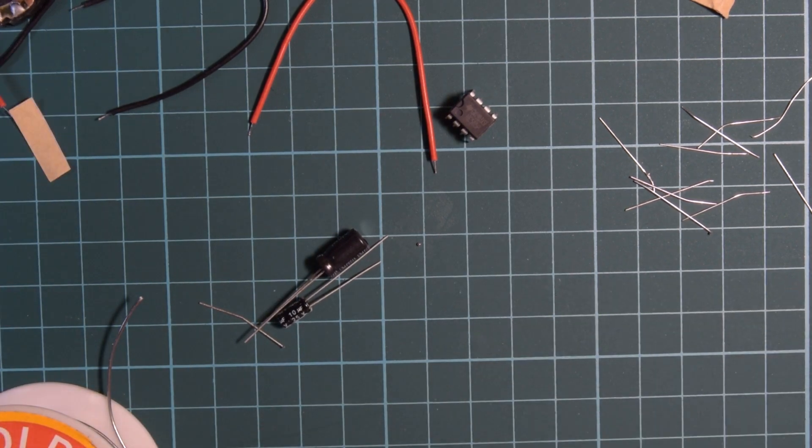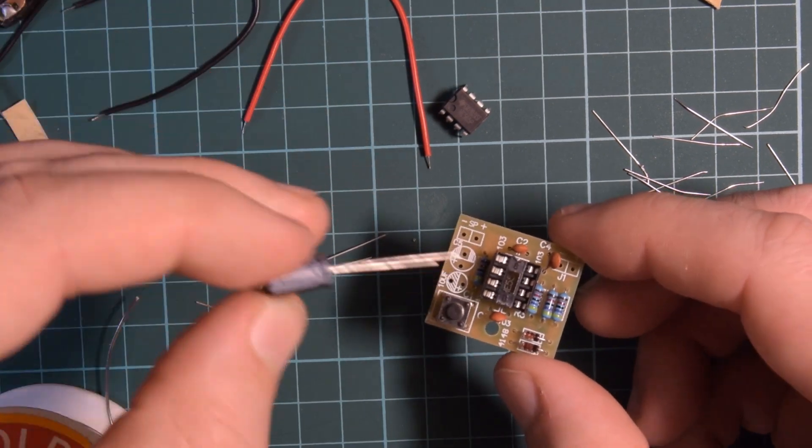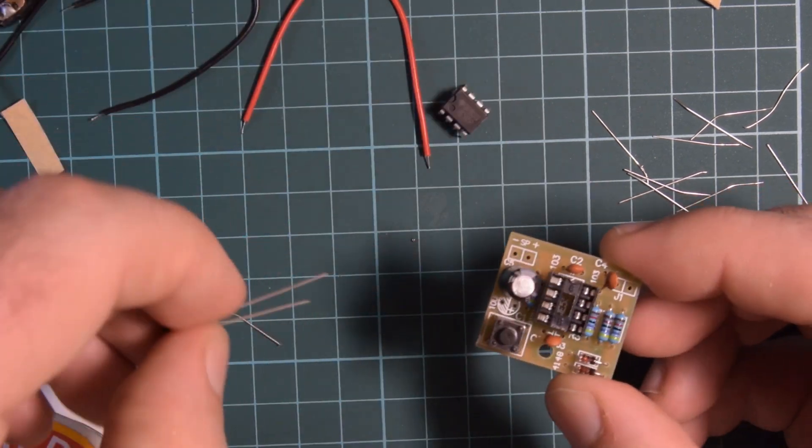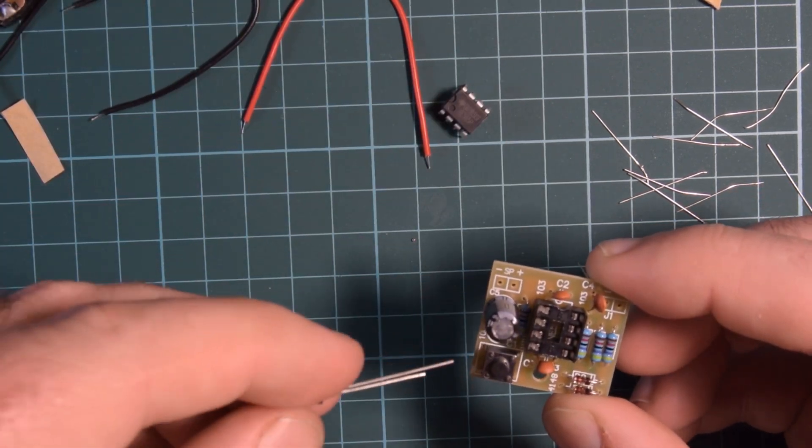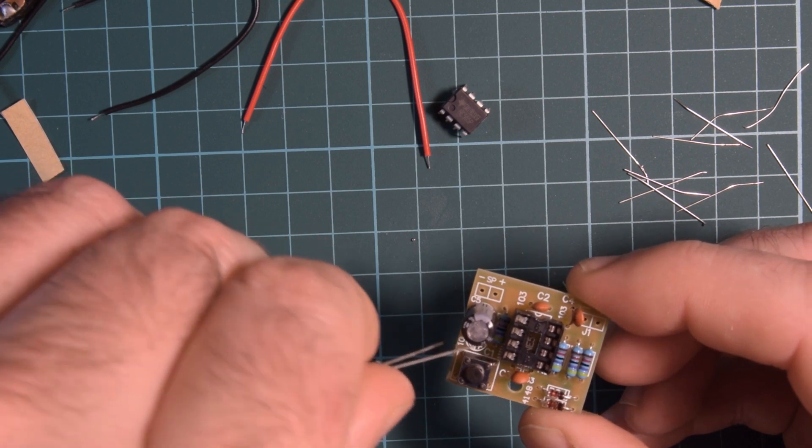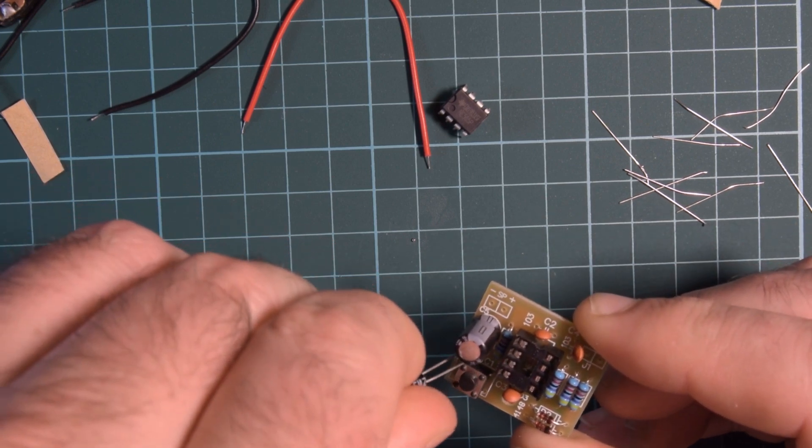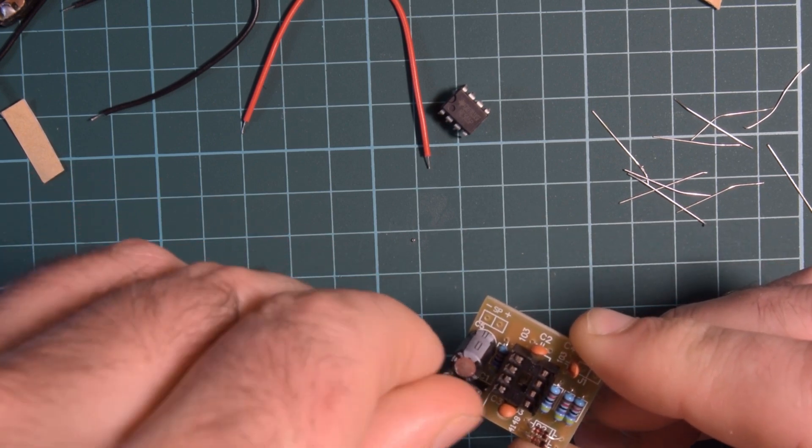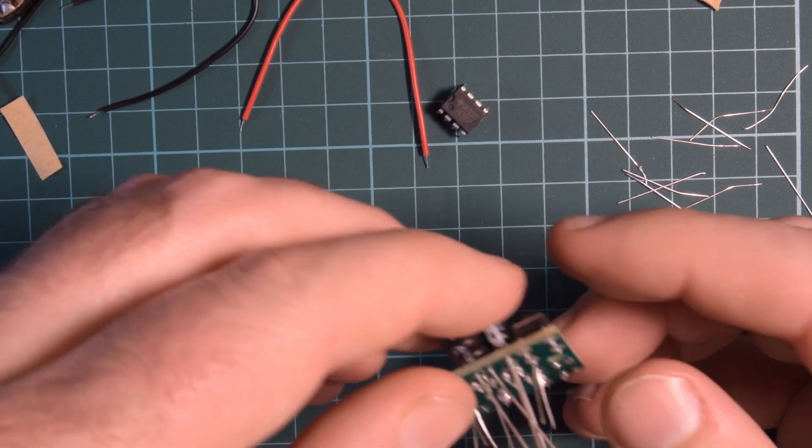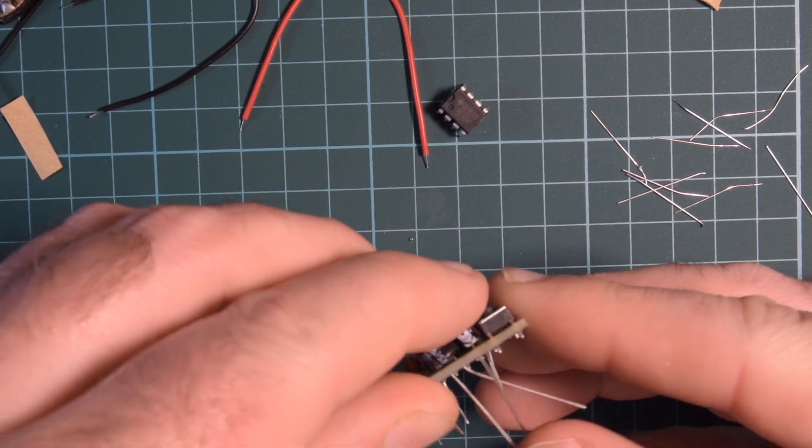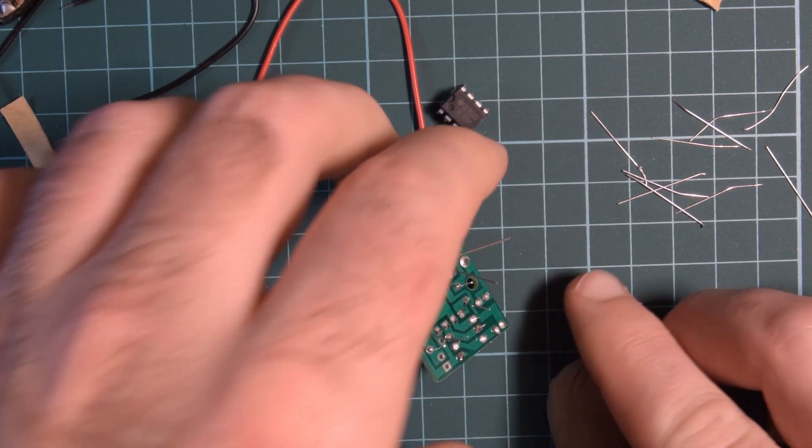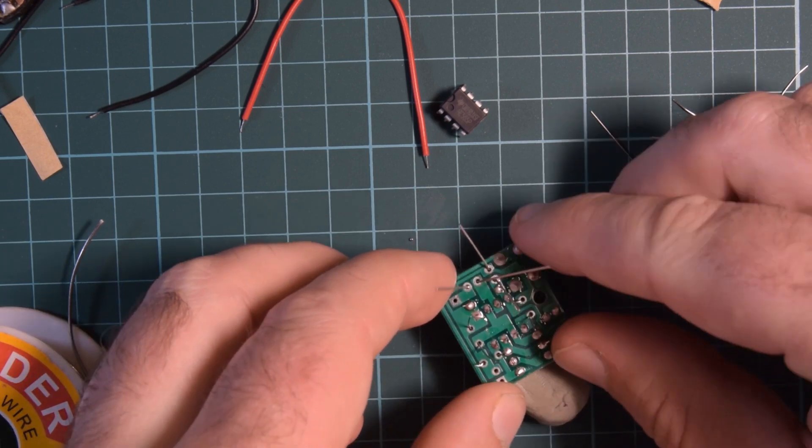Might as well do the electrolytics at the same time. So the band is negative. Put that towards the band. Oh that one's huge. That's probably the one that's going to be charged up and then discharged to make the tone. I'm guessing. Oh they don't really fit there together very well. It's not usual that they give us caps that are bigger than the design intended. Usually they go the other direction. But I will take it.